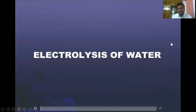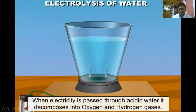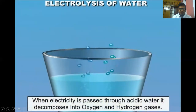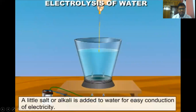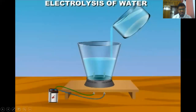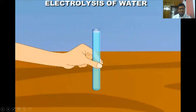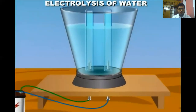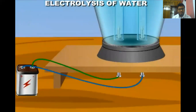Activity: Electrolysis of water. When electricity is used to decompose a substance, it is called electrolysis. When electricity is passed through acidic water, it decomposes into oxygen and hydrogen gases. Since water is a bad conductor of electricity, a little salt or alkali is added to water for easy conduction. Dissolve a little quantity of acid in water and pour the solution into an apparatus with two test tubes. Invert these test tubes over the iron nail electrodes.